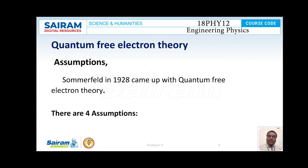The following assumptions were retained from classical free electron theory. The fourth assumption is: the electrons travel in a constant potential inside the metal but stay confined within its boundaries. Both the attraction between electrons and lattice ions, and the repulsion between electrons, are totally ignored. These are the four assumptions given by quantum free electron theory.